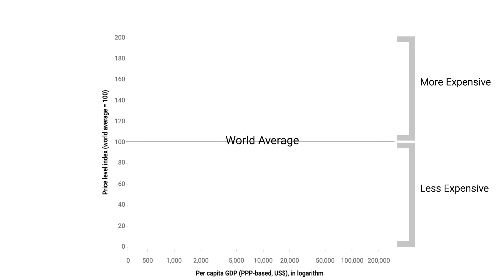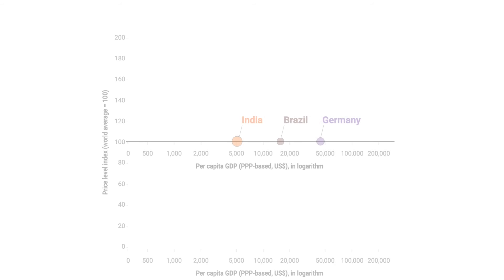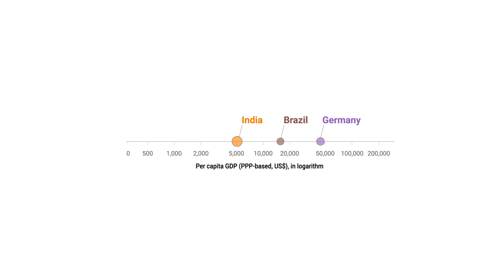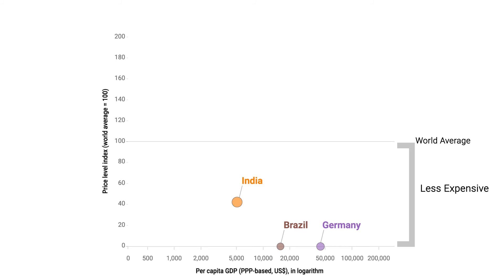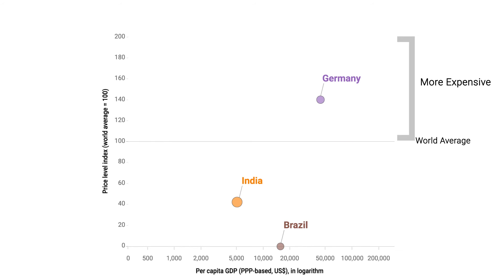Now, let's bring back the three circles. Here, the world average PLI is set at 100. Let's align the economies vertically by their price levels. India appears to be relatively less expensive compared to the world average. Germany is relatively more expensive. Brazil is closest to the world average among the three.